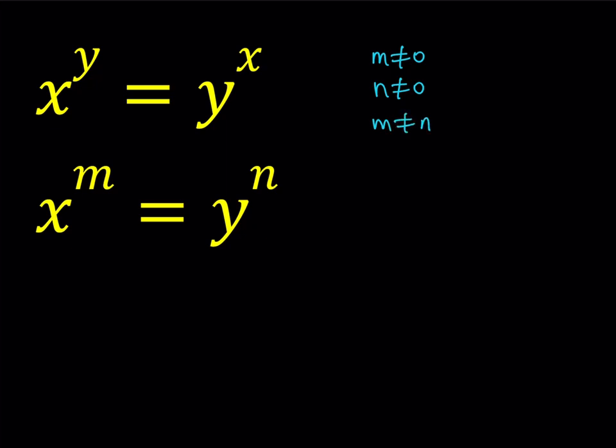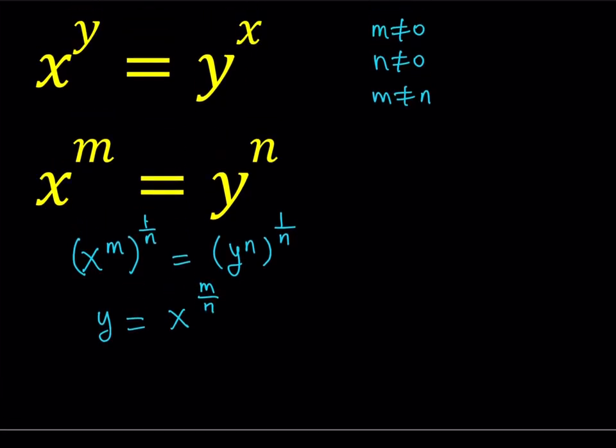So how do you go about solving this type of equation? Since none of them equals 0, I can raise both sides of the second equation to the power 1 over n. This isolates the y on the right hand side. This gives us y equals x to the power m over n, using the power of a power rule. This allows us to write y in terms of x, so now we can use that in our first equation.